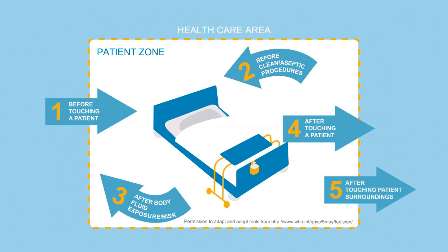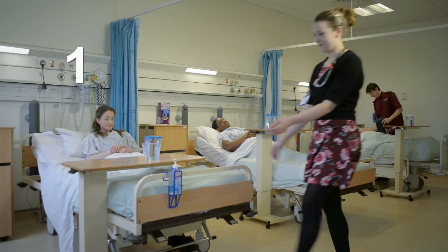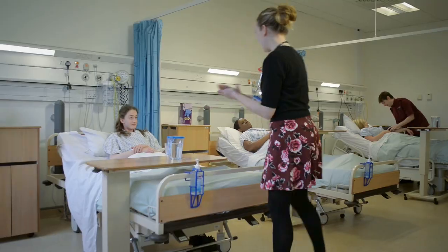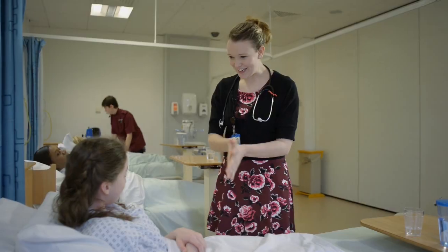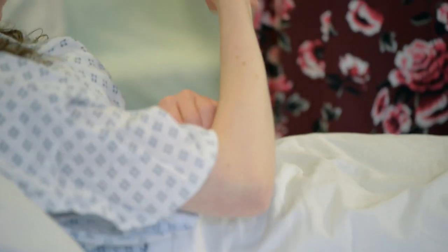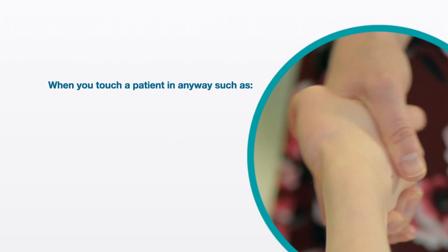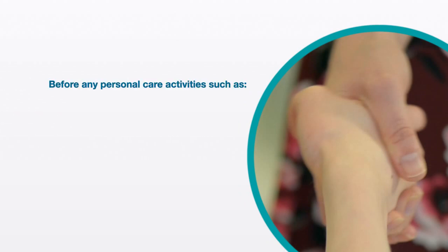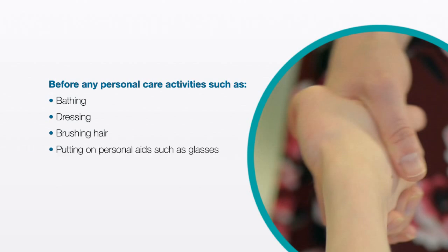The role of Moment One is to protect the patient against acquiring harmful germs from the hands of the healthcare worker. It must be performed directly before contact on entering the patient's zone. Examples include when you are going to touch a patient in any way, such as shaking hands or assisting a patient to move, and before any personal care activities such as bathing, dressing, brushing hair, or putting on personal aids such as glasses.